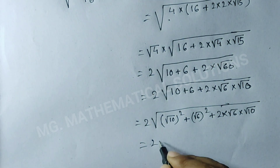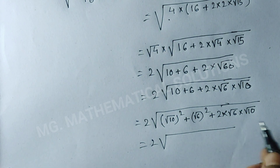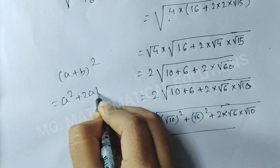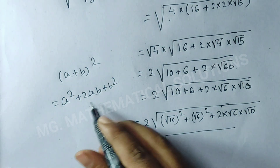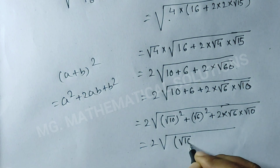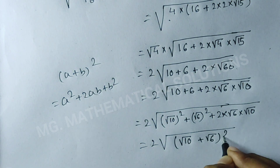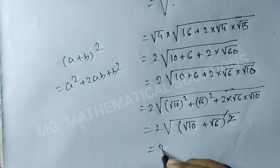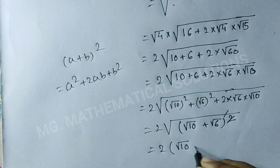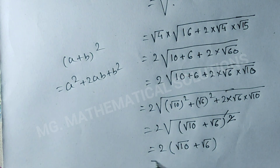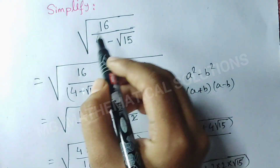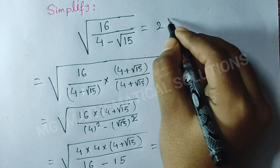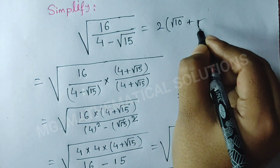This matches the formula (a plus b) whole squared equals a squared plus 2ab plus b squared, where a means root 10 and b means root 6. So we get root of (root 10 plus root 6) squared, which equals 2 times (root 10 plus root 6). Hence, root of [16 divided by (4 minus root 15)] equals 2 times (root 10 plus root 6).